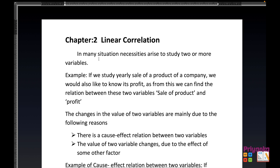In many situations, the necessity arises to study two or more variables. For example, if we study the yearly sales of a product of a company, we would also like to know its profit. From this, we can find the relation between these two variables — that is, sale of product and profit. This is an example of two variables we are going to study.